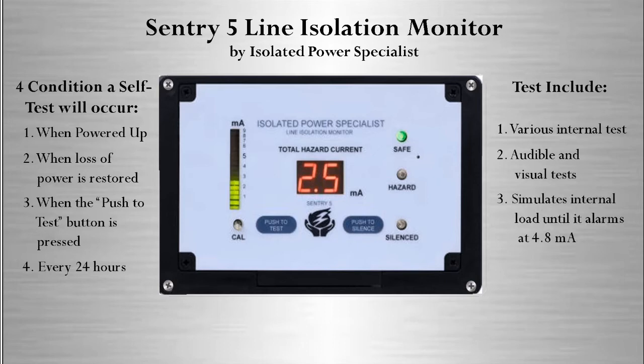The Century 5 line isolation monitor is set to alarm at 4.8 milliamps instead of the 5.0 milliamps to ensure that we are within code. Therefore, the line isolation monitor will simulate an internal load until the line isolation monitor reaches 4.8 milliamps. Let's watch the Century 5 respond to an increase in leakage.